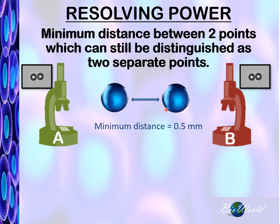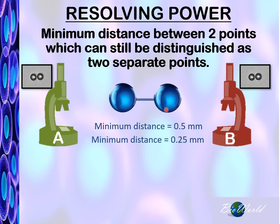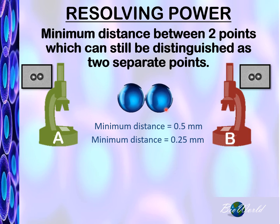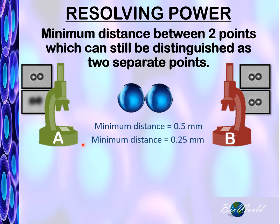Now let's bring the spheres closer together. Let's say now the distance is only 0.25 millimeters. Let's see what the images from both Microscope A and B look like. Here you can see the image in Microscope A has started to become blurry, whereas the image in Microscope B is still very clear.